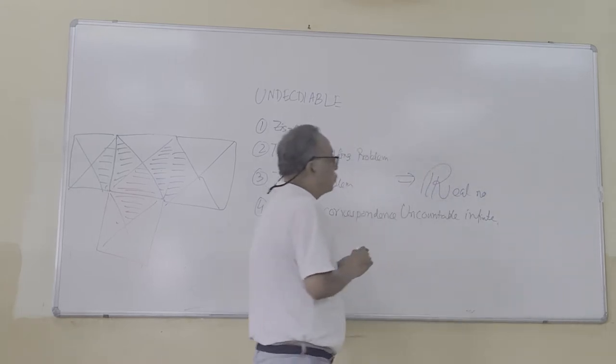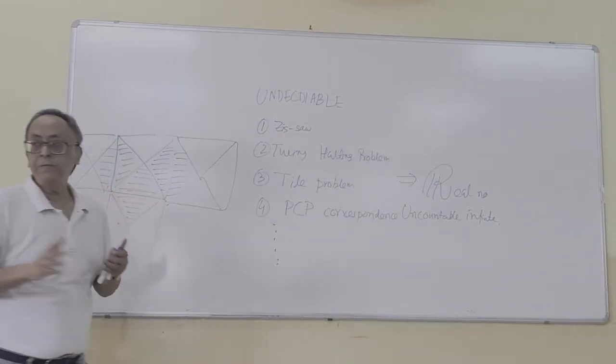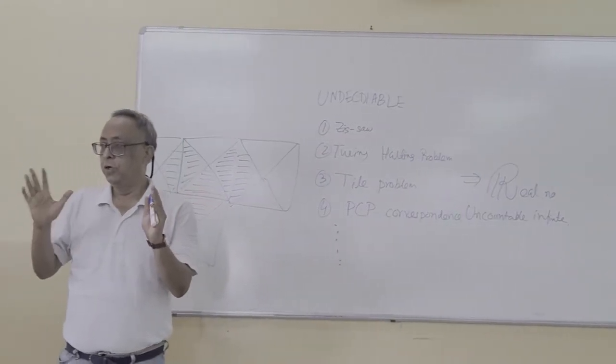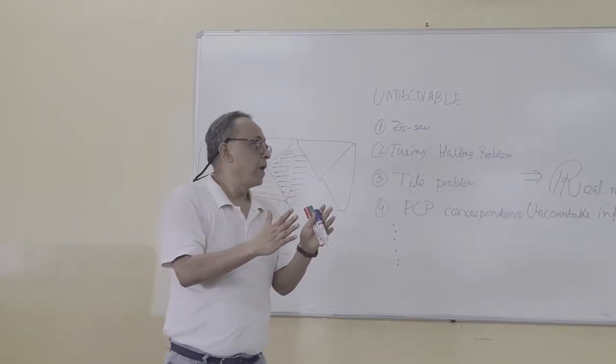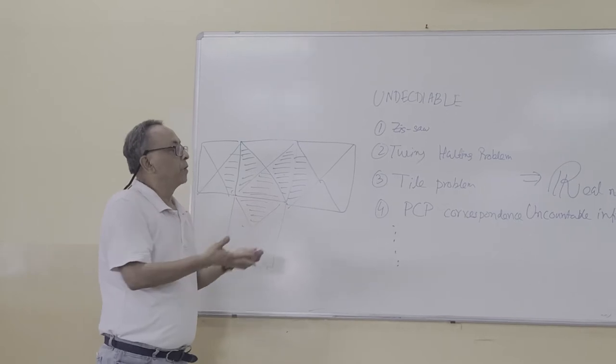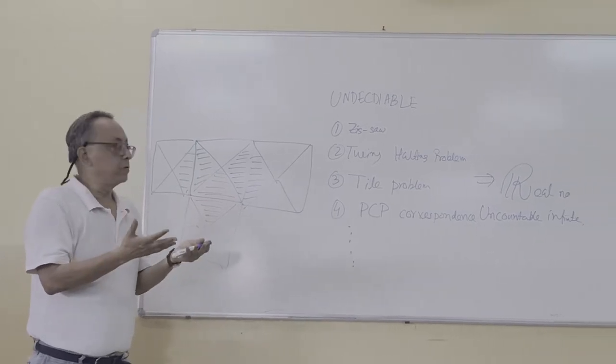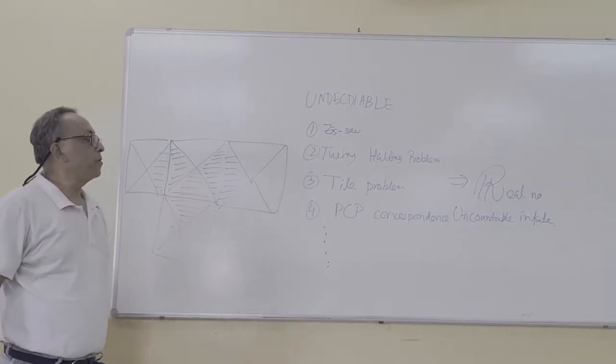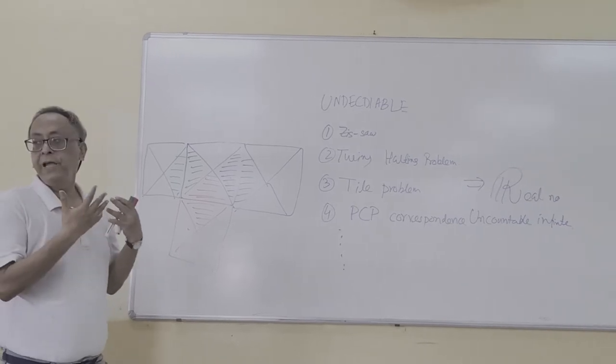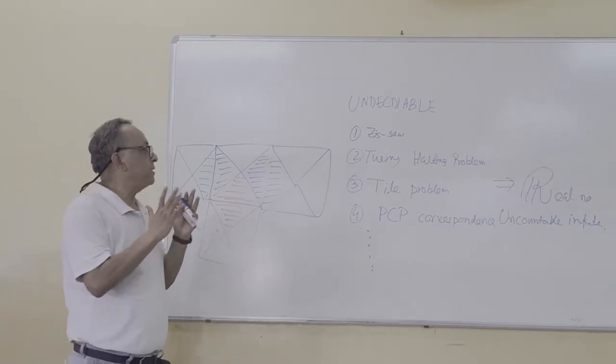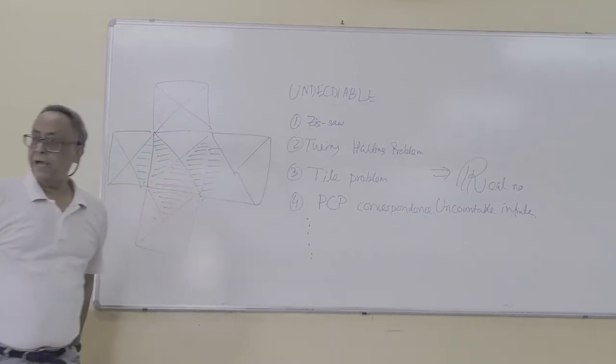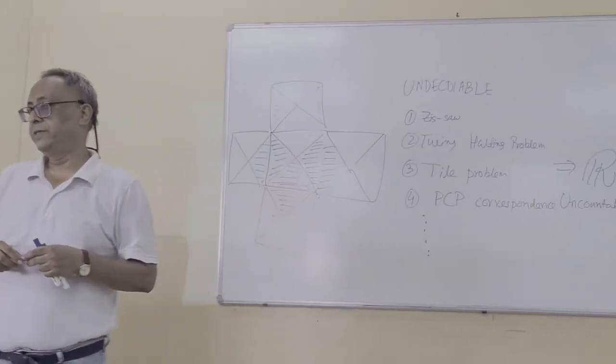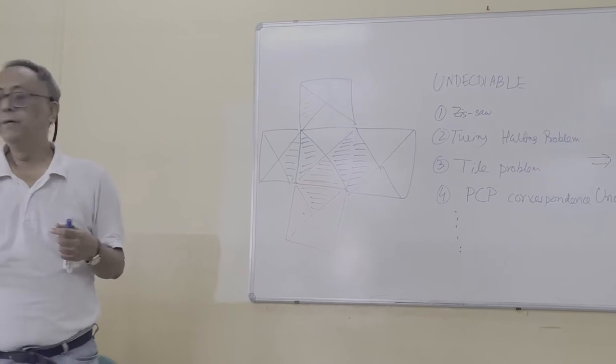But our Turing recognizable problem is now different. In fact, Turing recognizable problem - that a Turing machine already halts in confinement, may halt and may not halt. That is Turing recognizable or enumerable.